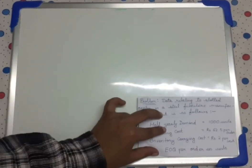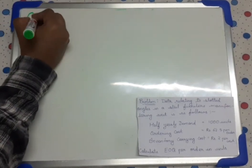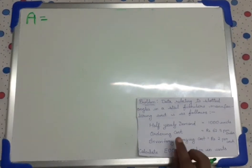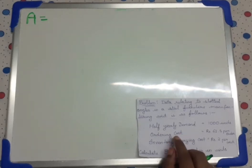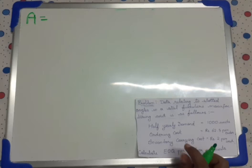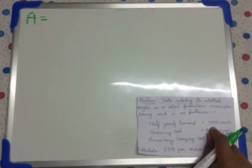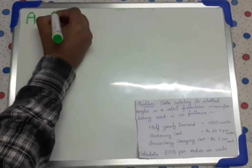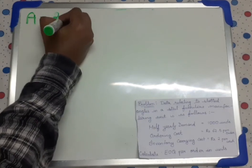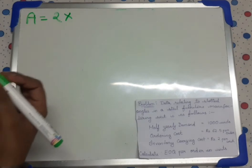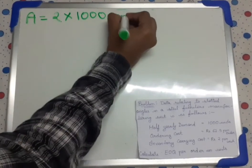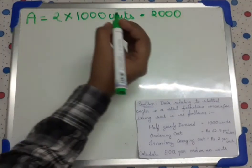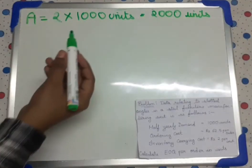So let's solve. A is annual demand of raw materials in units. In this question, they have given the demand for half yearly. So for 6 months, the demand is 1000 units. So then what will be the demand for 1 year? 1 year is 12 months, so for 6 months if it is 1000 units, then for 12 months it would be double — that is 2 into 1000 units, which is 2000 units. So annual demand of raw materials in units is 2000 units, that is 2 times the half yearly demand.